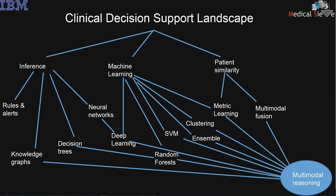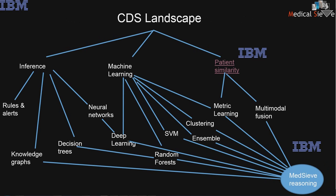Artificial neural networks were introduced for clinical decision support back in the early 1990s, and now you see a resurgence through deep learning. Decision trees started in AI from a reasoning perspective and evolved into random forests and multi-layer random forests. Metric learning techniques, which initially started from machine learning for clustering, also evolved to look for similar patients. All of these are now converging toward multimodal reasoning.